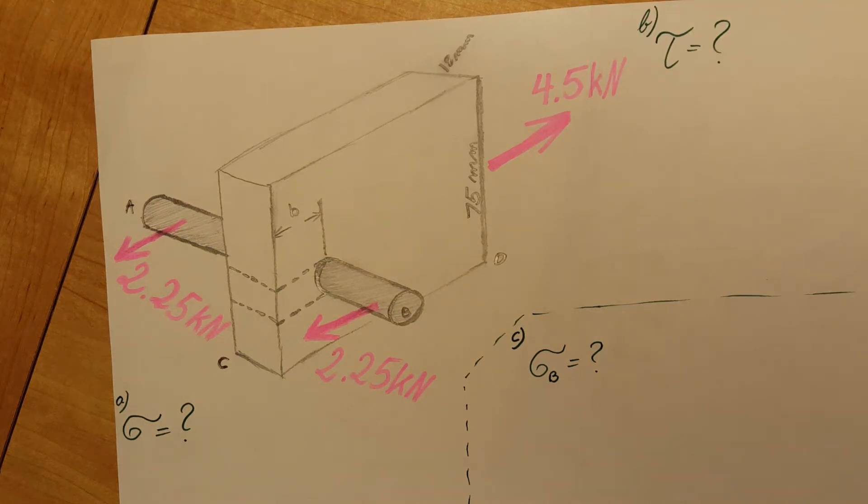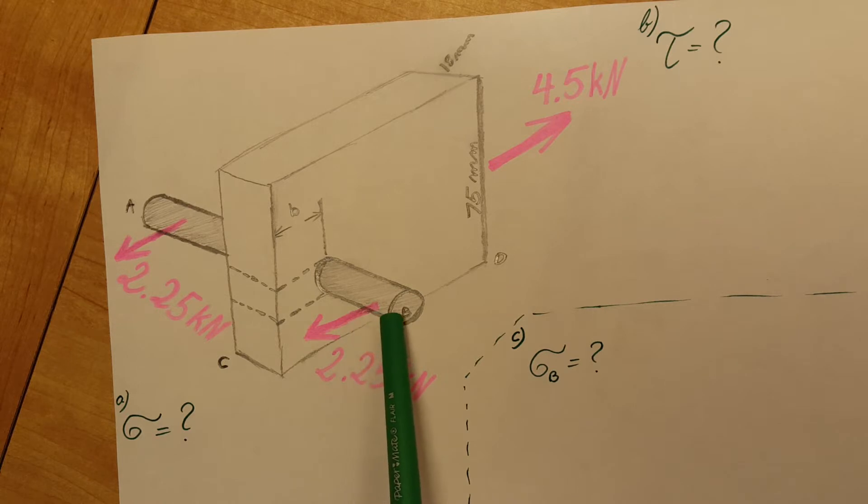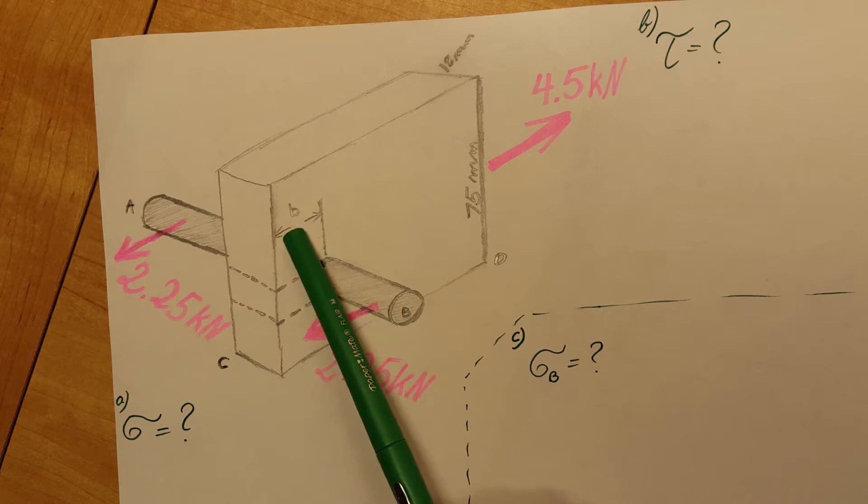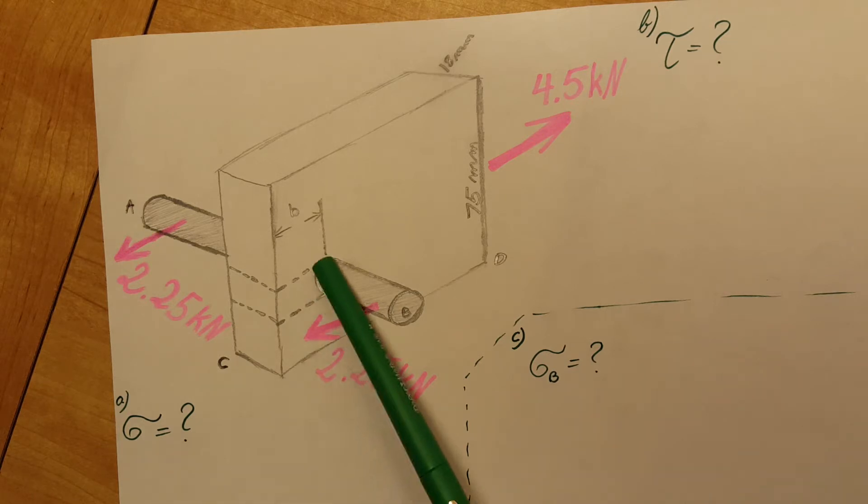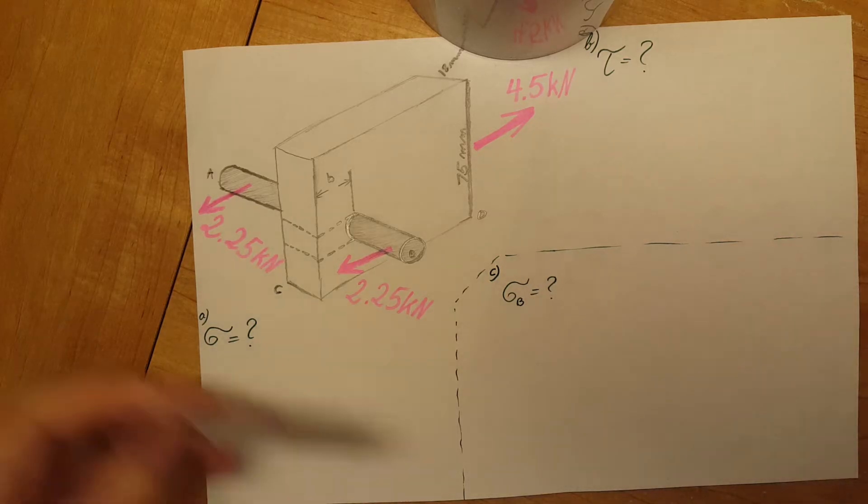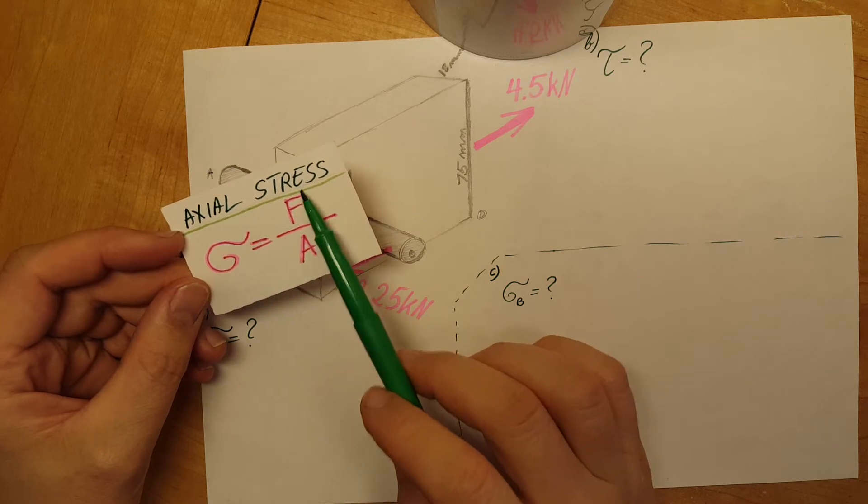This is a strength of materials problem. Here we have a 0.12 millimeter diameter steel rod that is fitted to a round hole in this wooden member, and we also have a loading on it as it shows right here. They want us to find the maximum average normal stress in the wood, the distance b for which the average shearing stress is 620 kilopascals on the surface indicated, and the average bearing stress on the wood.